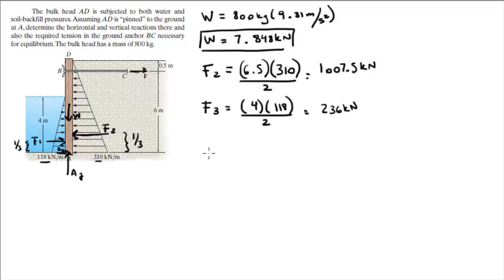So now that we have all our forces, we got F1, we got F2, we got the weight. What we're missing is the force at the anchor at B, and we're missing AY and AX. Three forces, so we need three formulas obviously.